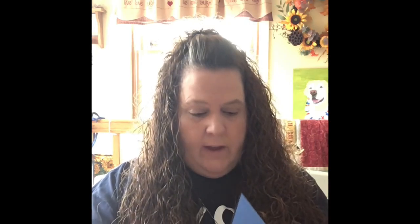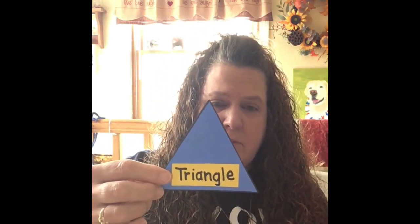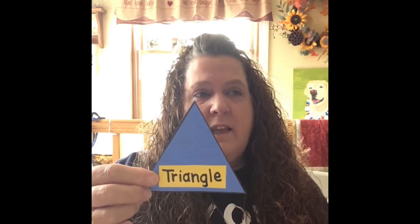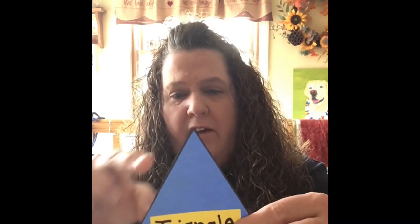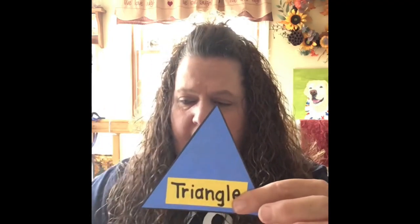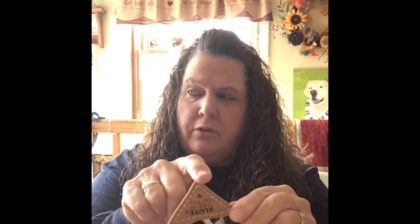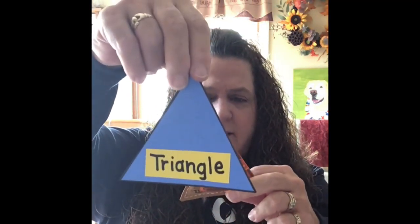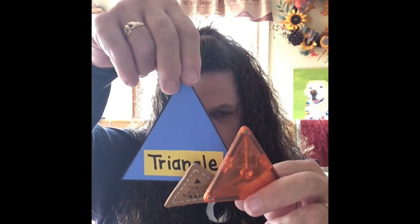I also found some triangles. They have one, two, three sides. I looked for things with three sides and I found a block — one, two, three, it has three sides — and I found an old game piece that also has one, two, three sides. Those were my triangles and they look very similar.